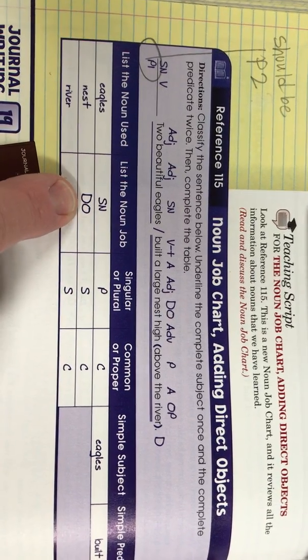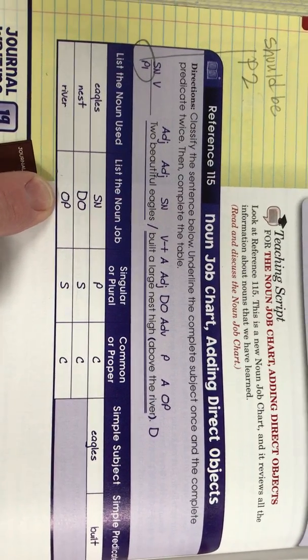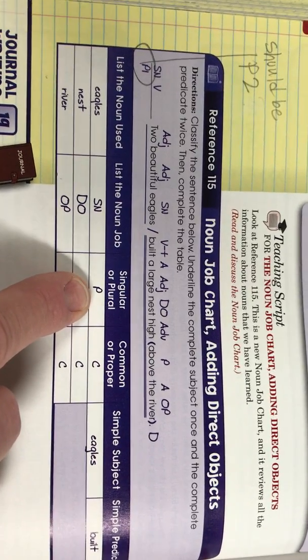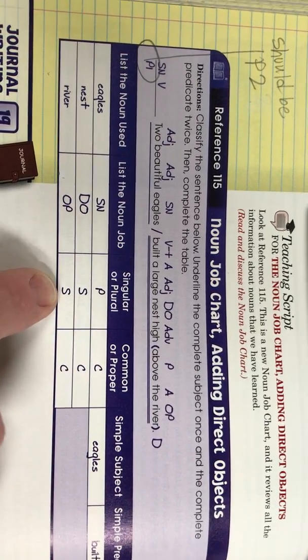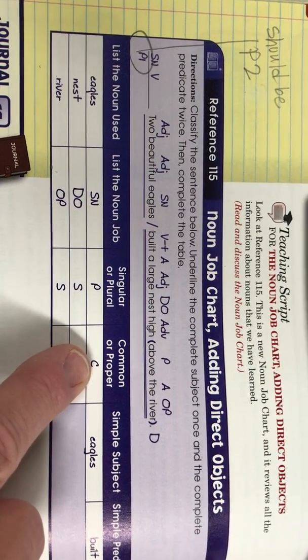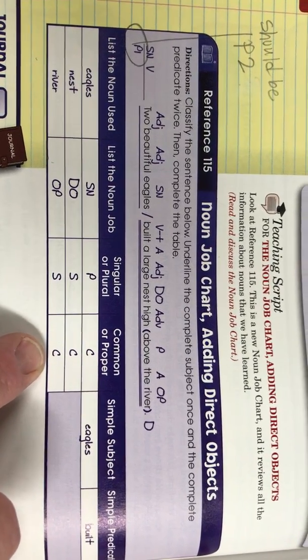We've got subject noun, direct object, and object of the preposition. And then you also know how to figure this out. If it's a singular or plural noun, you put singular or plural. And if it's common or proper, you put common or proper.